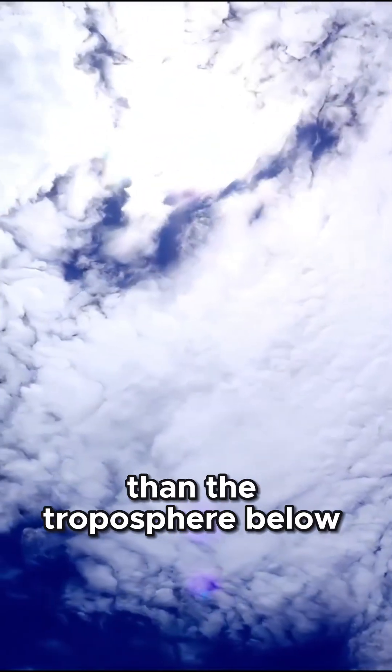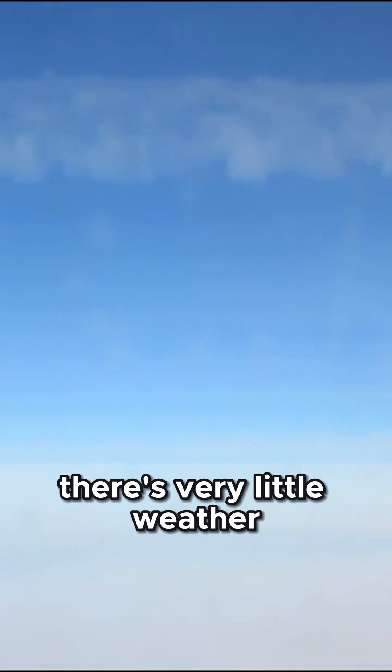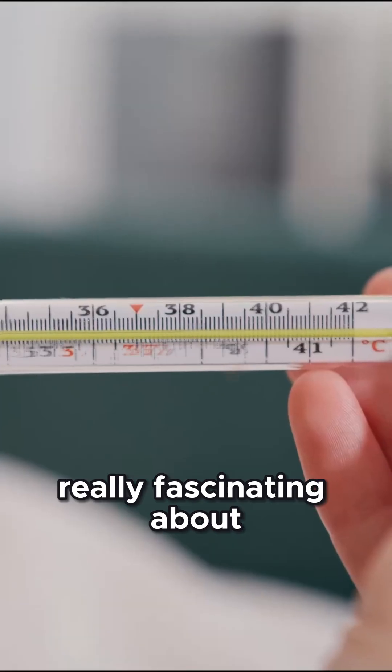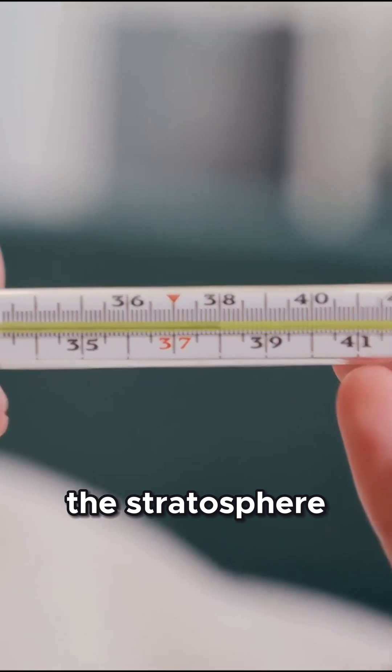The stratosphere is a much calmer place than the troposphere below. There's very little weather here because the air tends to flow in horizontal layers, which is where the name 'strato' comes from. But what's really fascinating about the stratosphere is its temperature trend.